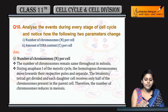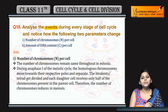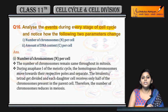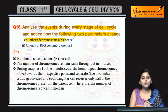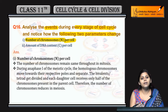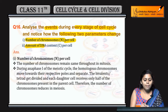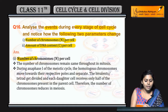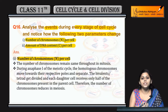Question No. 16: Analyze the events during every stage of the cell cycle and notice how the following two parameters change. Korn-korn se parameters? Number of chromosomes, n persons. Kya woh barhte hain ya kam hote hain? Amount of DNA content, c persons. Hameen ye check karna hai. Number of chromosomes, n persons.